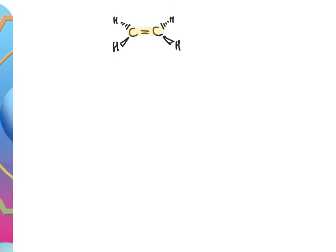Looking at ethene drawn as a three-dimensional shape, if we focus on the shape around each carbon, we can see there are essentially three bonding pairs. In VSEPR — valence shell electron pair repulsion theory — you treat a double bond as a single bonding pair. So around each carbon we have three bonding pairs and no lone pairs.